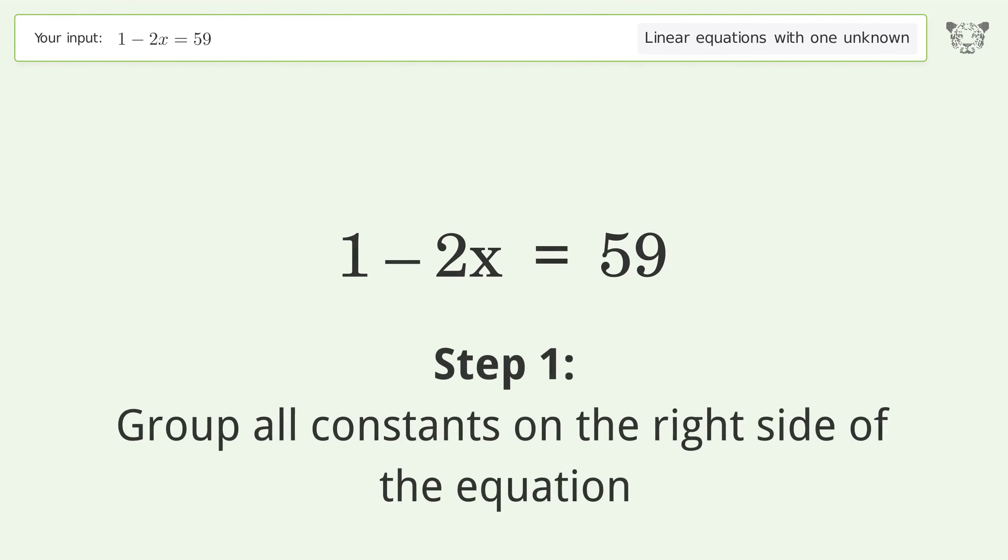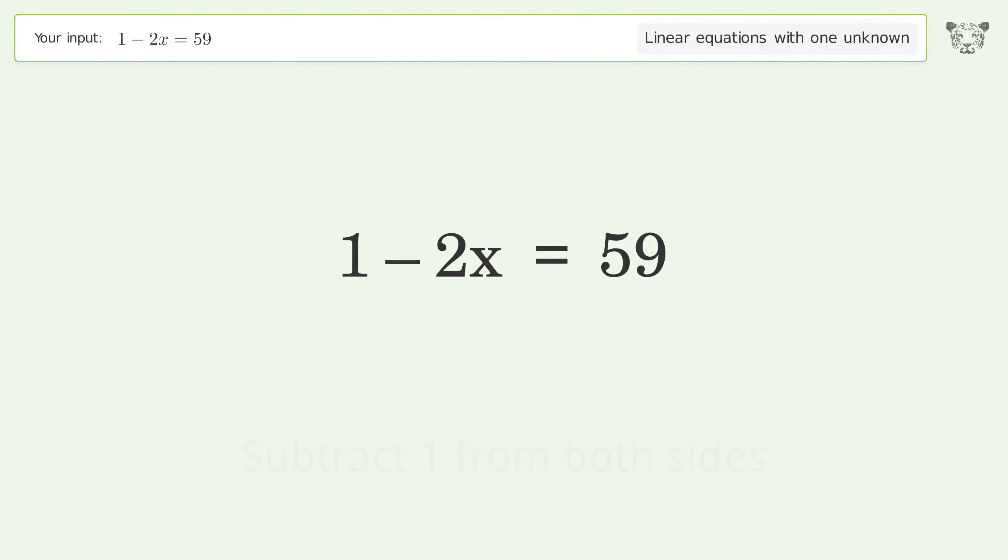Group all constants on the right side of the equation. Subtract 1 from both sides. Group like terms, then simplify the arithmetic.